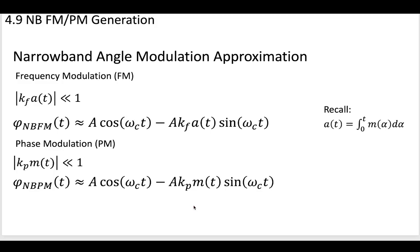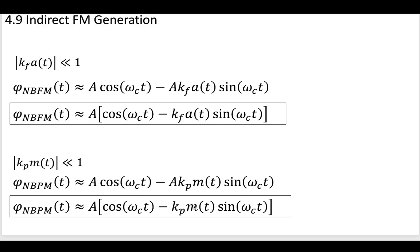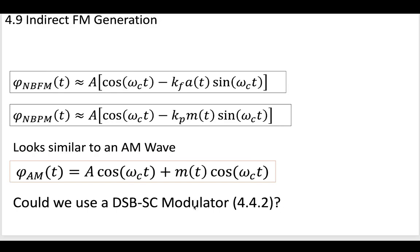These are the two different narrowband angle approximations. The reason we're interested in this form is that it looks quite similar to the amplitude modulation we discussed earlier. The amplitude-modulated wave looked like this, and we can see that our narrowband approximations look very similar in form. They have two sinusoidal terms—the first term is the carrier only, and the second term is based on the message.